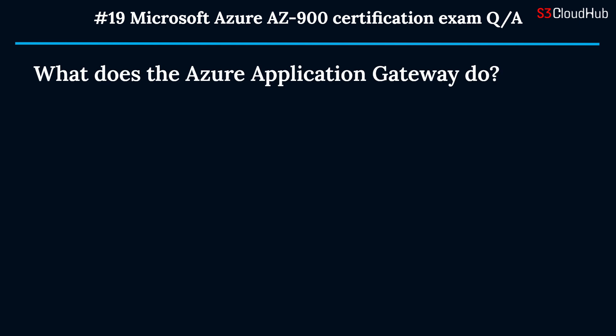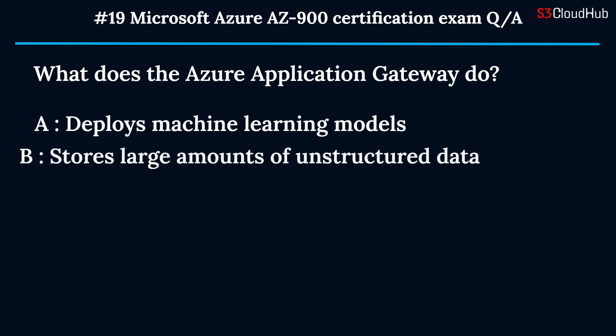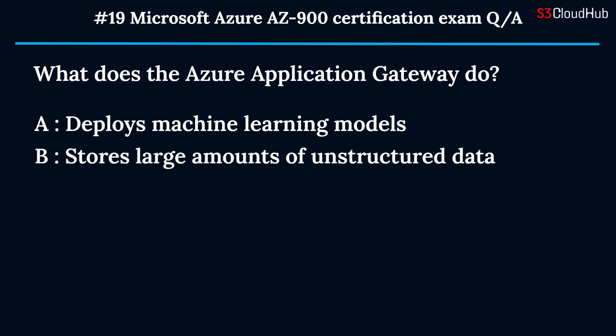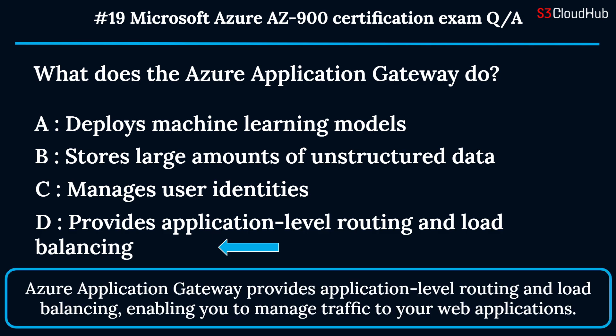The nineteenth question: what does the Azure Application Gateway do? Option A: deploys machine learning models. Option B: stores large amounts of unstructured data. Option C: manages user identities. Option D: provides application-level routing and load balancing. The correct answer is option D. Azure Application Gateway provides application-level routing and load balancing, enabling you to manage traffic to your web applications.